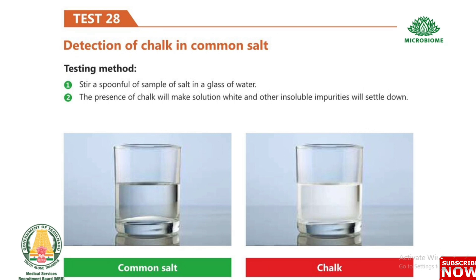Test 28: Detection of chalk in common salt. Stir a spoonful of sample salt in a glass of water. The presence of chalk will make the solution white, and other insoluble impurities will settle down.